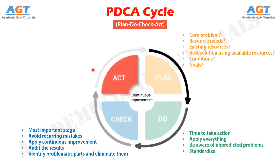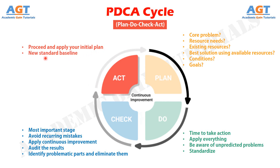Step number four: Act. Finally, you arrive at the last stage of the Plan-Do-Check-Act cycle. Previously, you developed, applied, and checked your plan. Now, you need to act. If everything seems perfect and your team managed to achieve the original goals, then you can proceed and apply your initial plan. It can be appropriate to adopt the whole plan if objectives are met. Respectively, your PDCA model will become the new standard baseline. However, every time you repeat a standardized plan, remind your team to carefully go through all steps again and try to improve.